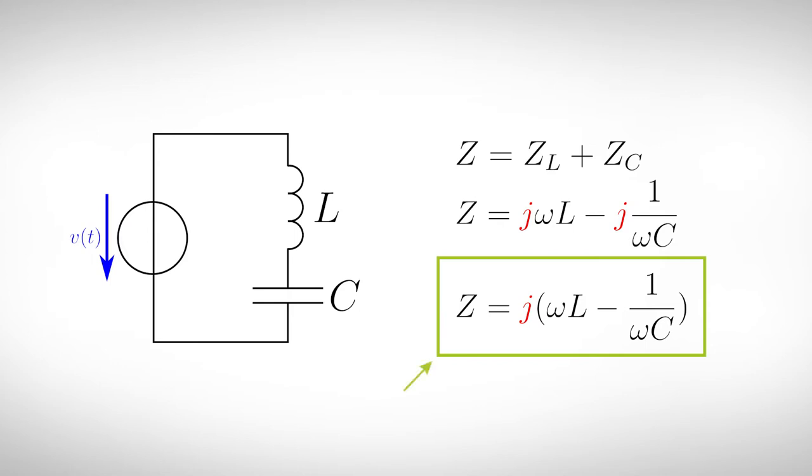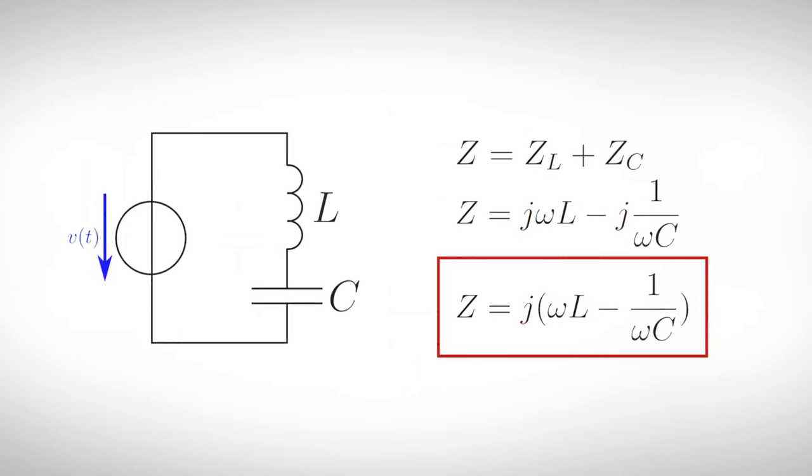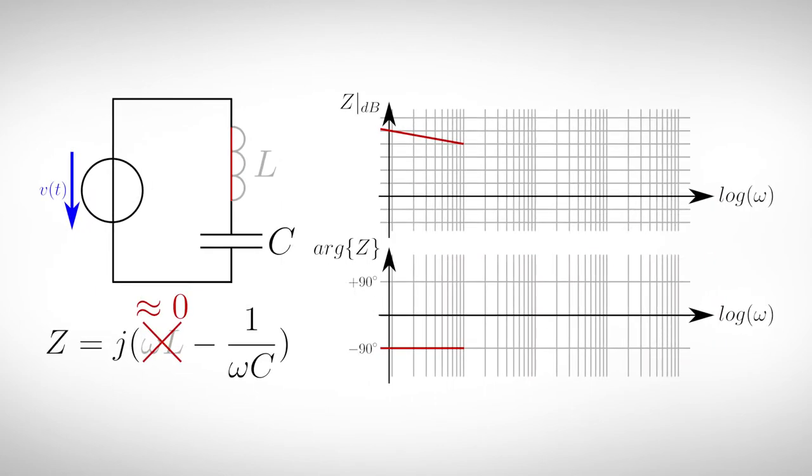We can write the total impedance in the following way. To investigate the behavior of the circuit, let's apply a frequency sweep to the circuit. At low frequencies, the impedance of the inductor is very small, which makes sense since it's basically a simple piece of wire. We can neglect its impedance in comparison to the impedance of the capacitor. Therefore, the whole circuit acts like a capacitor and subsequently the current leads the voltage by 90 degrees.